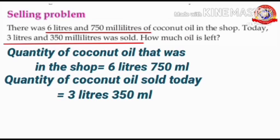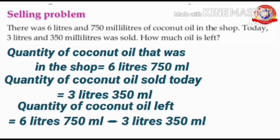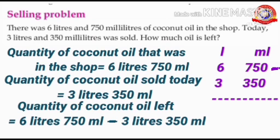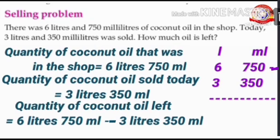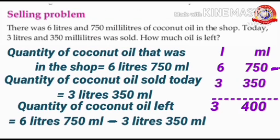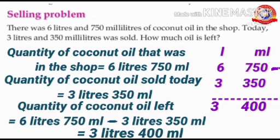Here, we have to find out the quantity of coconut oil left in the shop. To find out that, subtract each other. So, quantity of coconut oil left equals 6 liters 750 milliliters minus 3 liters 350 milliliters. Arrange liter and milliliters as shown here. Then write 6 below the liter and 750 below the milliliters. Then write 3 below the liter and 350 below the milliliters. Then subtract: 0 minus 0 is 0, 5 minus 5 is 0, 7 minus 3 is 4, 6 minus 3 is 3. So, quantity of coconut oil left equals 3 liters 400 milliliters.